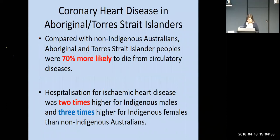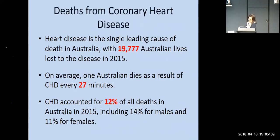People in the Aboriginal and Torres Strait Islander population fare worse than non-Indigenous Australians. The ATSI population is 70% more likely to die from circulatory diseases. In terms of being hospitalised with ischaemic heart disease, it's twice as high in Indigenous men and three times higher for Indigenous females compared to the non-Indigenous population. Deaths from coronary heart disease in Australia — it's certainly the single leading cause of death, with just under 20,000 deaths in 2015, averaging one Australian dying every 27 minutes from CHD.